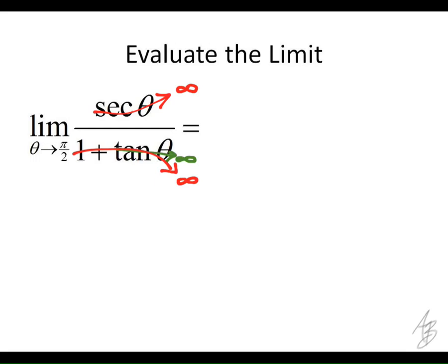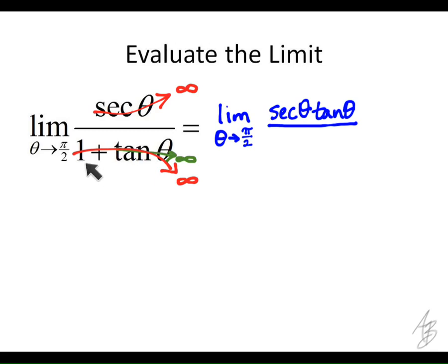So what do I do? I rewrite the limit — I'm always going to start by rewriting the limit. On top, I'm going to take the derivative of secant, which we had forgotten on Friday, but now we're going to know it. The derivative of secant is secant times tangent, so secant of theta times tangent of theta. And the derivative of 1 is 0, so that falls out. The derivative of tangent is secant squared.